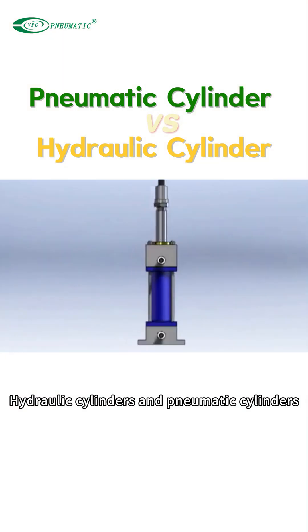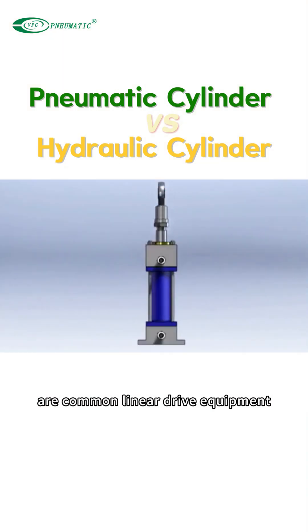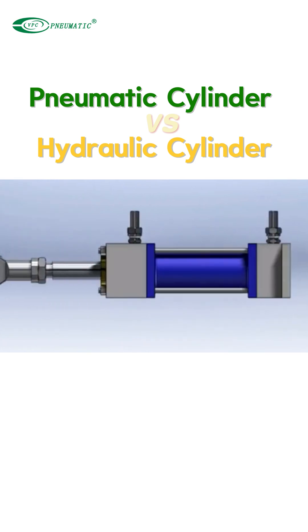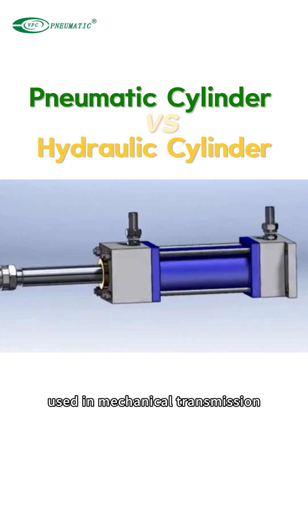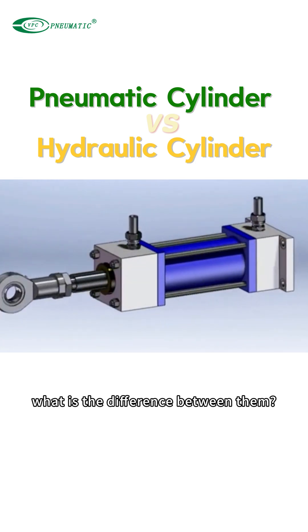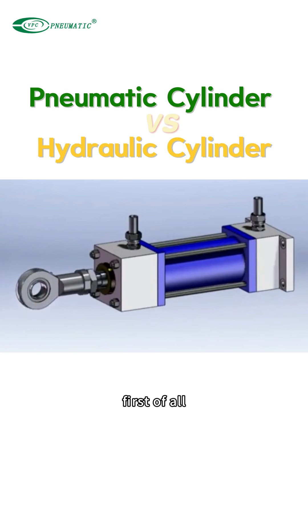Hydraulic cylinders and pneumatic cylinders are common linear drive equipment used in mechanical transmission. What is the difference between them?